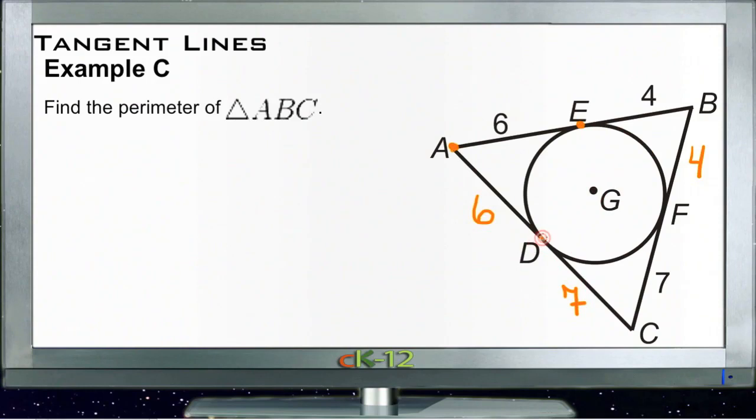Now there's kind of another interesting thing to point out here. Since this circle actually touches all the sides of the triangle and is tangent to all of them, we say that this circle has been inscribed within the triangle. And you'll work with a number of inscribed figures as you get farther into geometry. But this is what they look like.